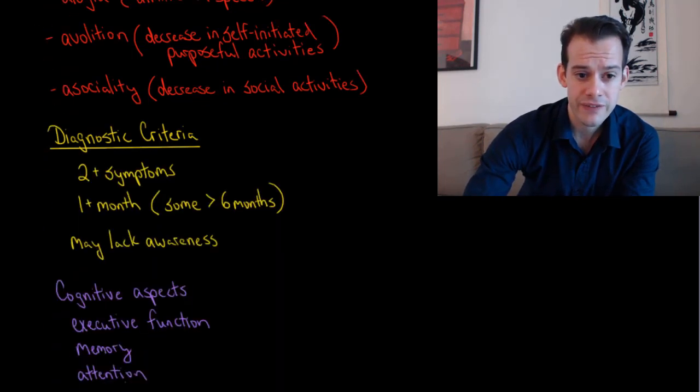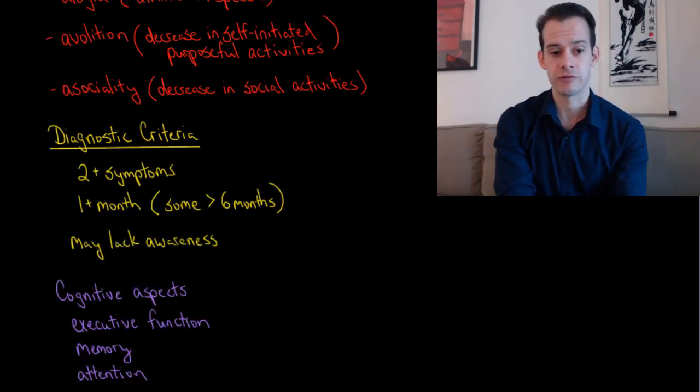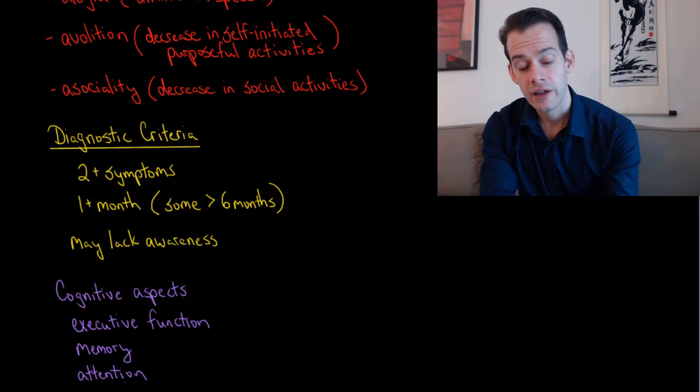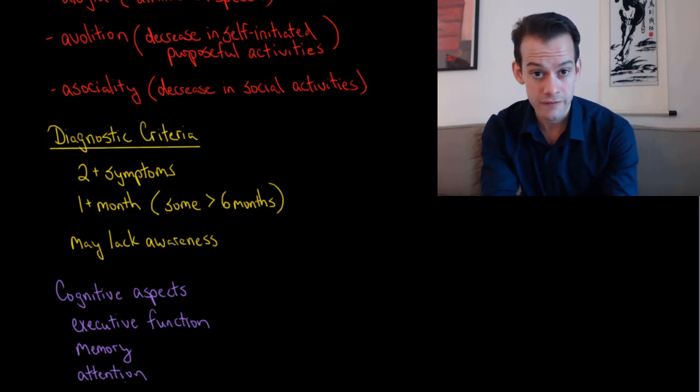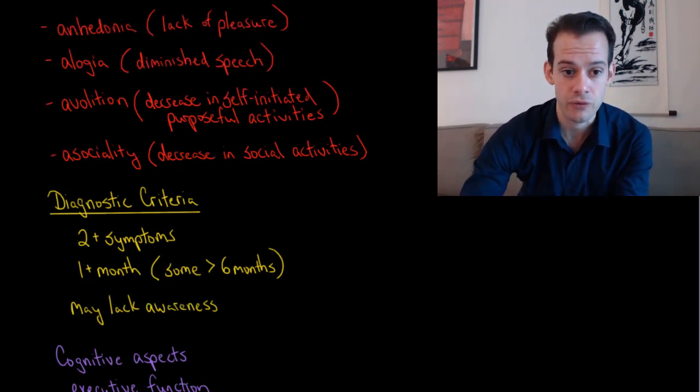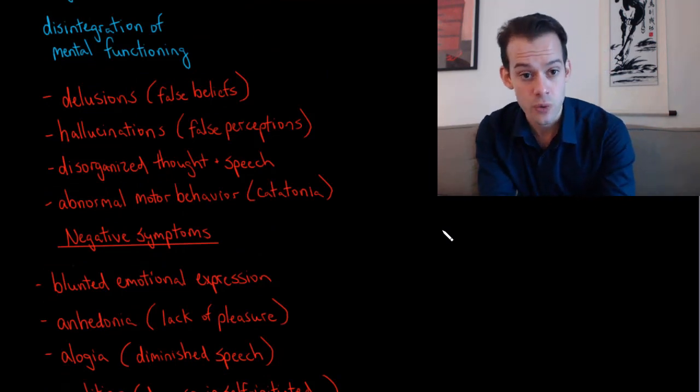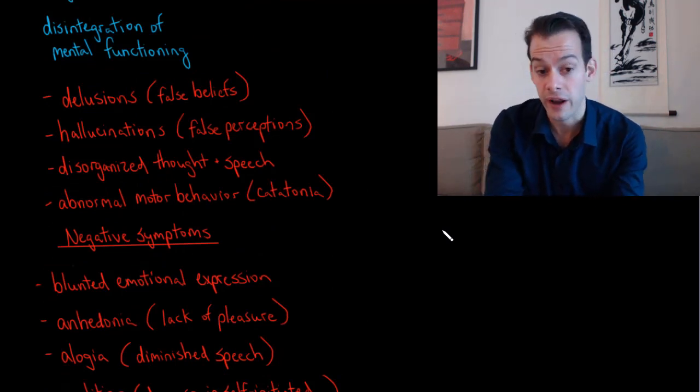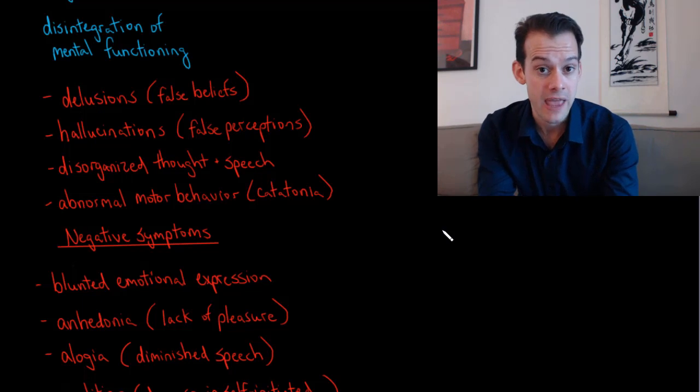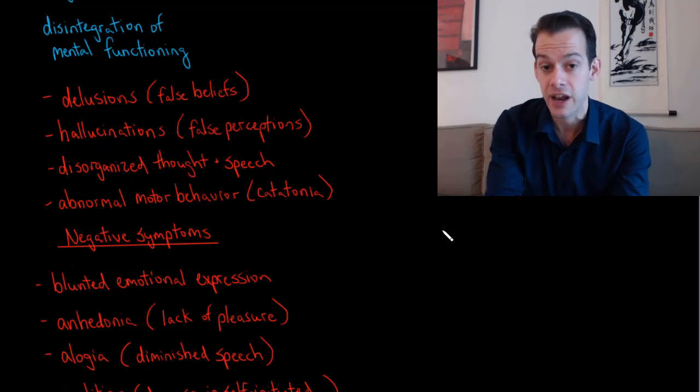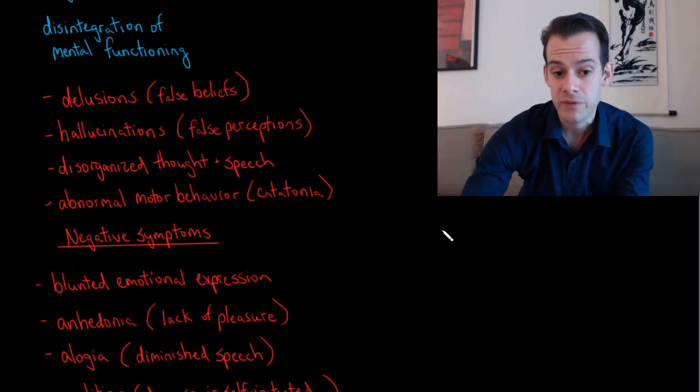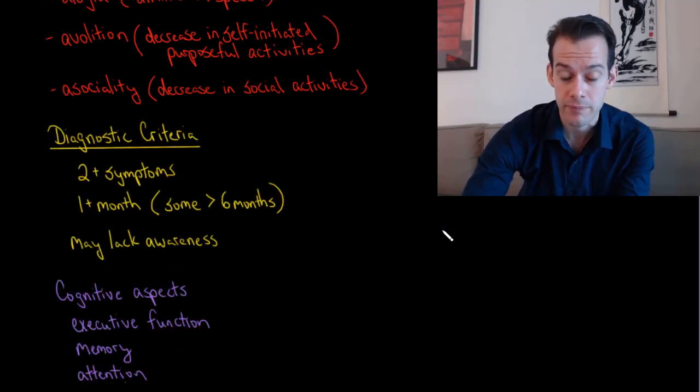Now we'll look at the diagnostic criteria for schizophrenia. First the patient needs to show at least two of the positive symptoms that I described. If we go back to that list we can see they must have at least two of these: delusions, hallucinations, disorganized speech, and abnormal motor behavior. One of those two must be from the first three. So they have to have delusions, hallucinations, or disorganized speech in order to get the diagnosis of schizophrenia.